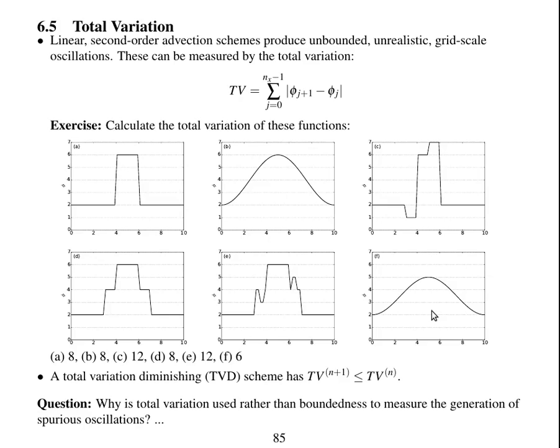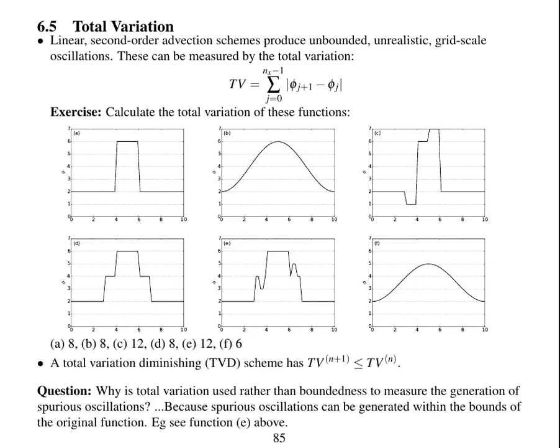So a question to think about: why is total variation used to measure the generation of spurious oscillations, rather than measuring boundedness? The answer is because spurious oscillations can be generated that are within the bounds of the original function. For example, this one.